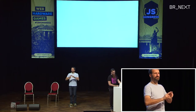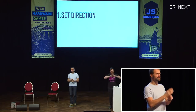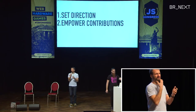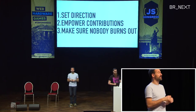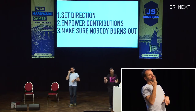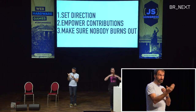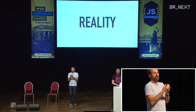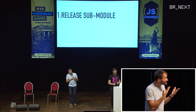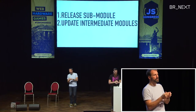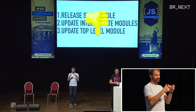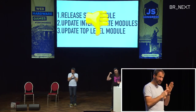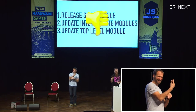There are top priorities for maintainers of open-source projects. Number one: set direction — what does it do and where is it going? Number two: empower contributions, get more people in. Number three: make sure nobody burns out and nobody leaves the project. What we were actually doing in reality was: release one sub-module, update the intermediate modules, update the top-level module. That is not aligned with those priorities, especially the last one about not burning out. If you're the maintainer and that's all you do, it's not very fun — you'll be out of there really quickly.